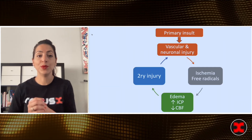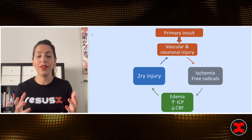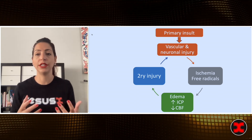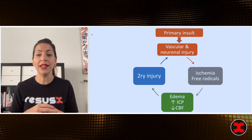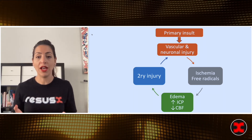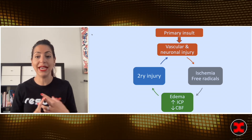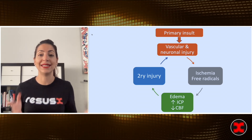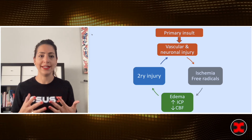What happens when people actually injure their brain? A lot of the pathophysiology at the core is the same. You have your vascular-neuronal injury from whatever happened — that stroke, the bleed, the injury — and then you have ischemia and free radicals. That causes a lot of edema, a lot of increased ICP, and decreased cerebral blood flow, which leads to secondary injury.